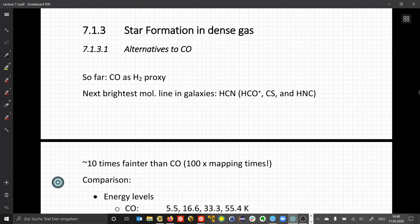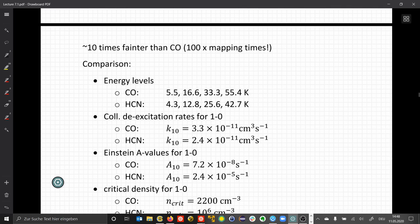Let's move on to star formation in dense gas and look at alternatives to using CO as an H2 proxy. The next brightest molecular line we can take is HCN. Even though it's the second brightest, HCN is about 10 times fainter than CO, which in terms of measurement takes 100 times the measurement time to get the same signal-to-noise ratio.